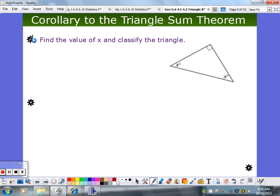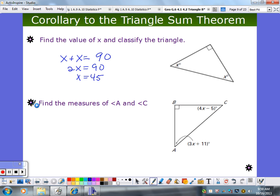So find the value of X and then classify. This one I don't think is on your paper. So just look up here. So we find the value of X using the corollary. What's it going to be? Why? Why is that 45? By the corollary that says the two acute angles are going to be 90. So 2X is 90, X equals 45, right? 45 degrees for that value.